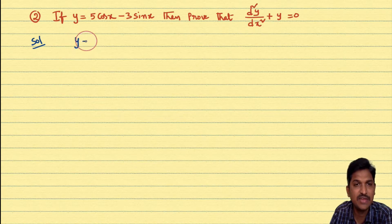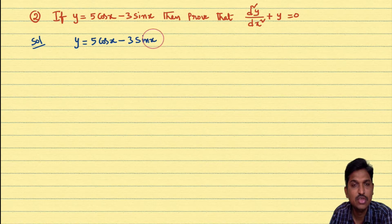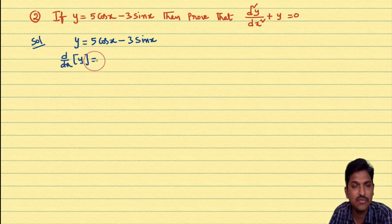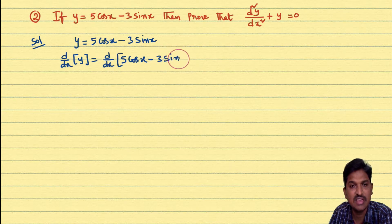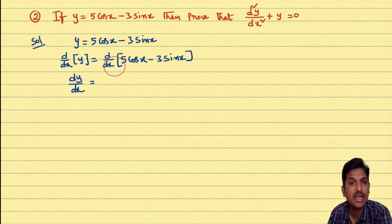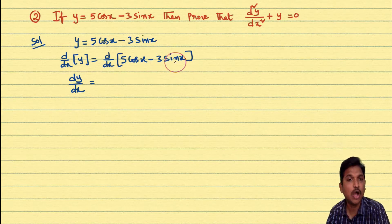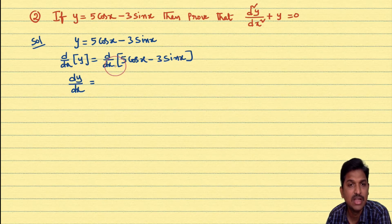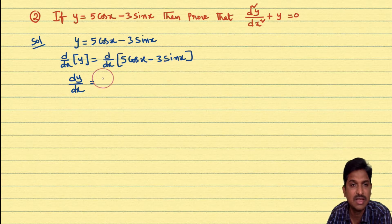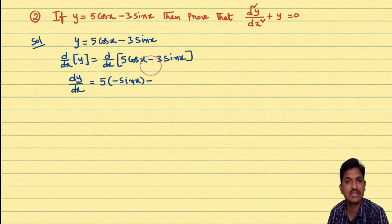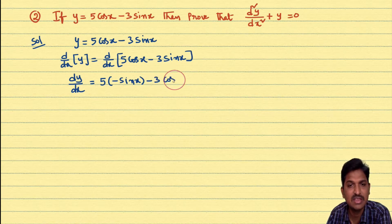To do this problem, first take the given function: y = 5cos x - 3sin x. Differentiating both sides with respect to x: dy/dx = derivative of 5cos x - derivative of 3sin x. Since 5 is constant, derivative of cos x is -sin x; since 3 is constant, derivative of sin x is cos x. So dy/dx = -5sin x - 3cos x.